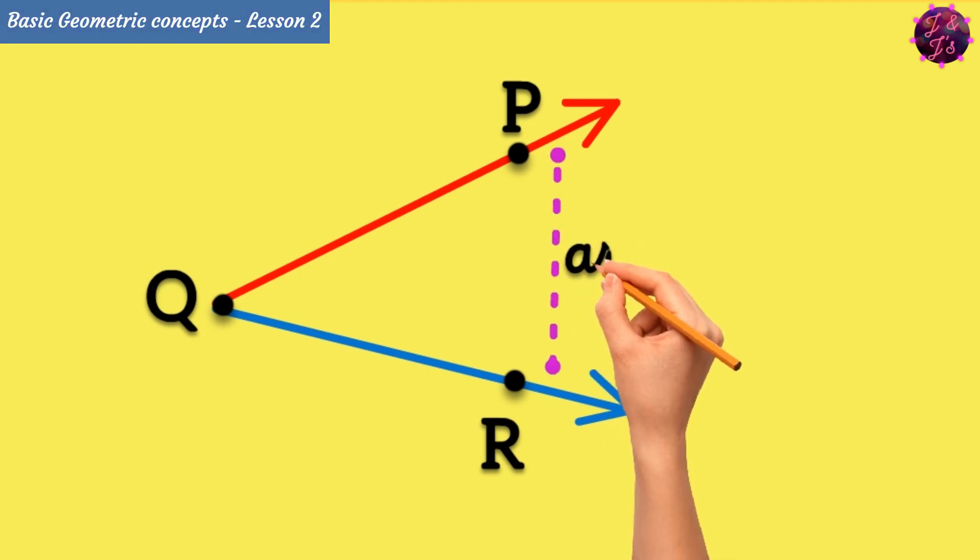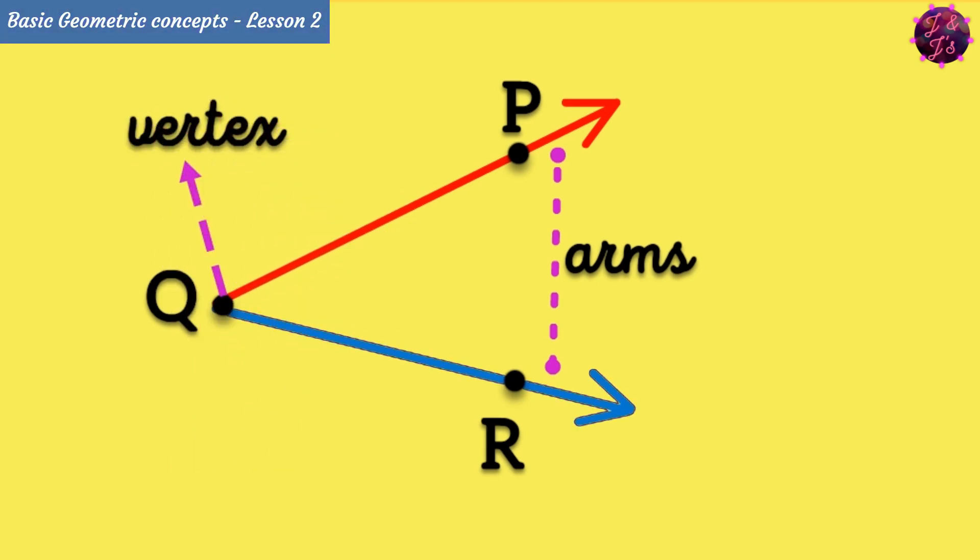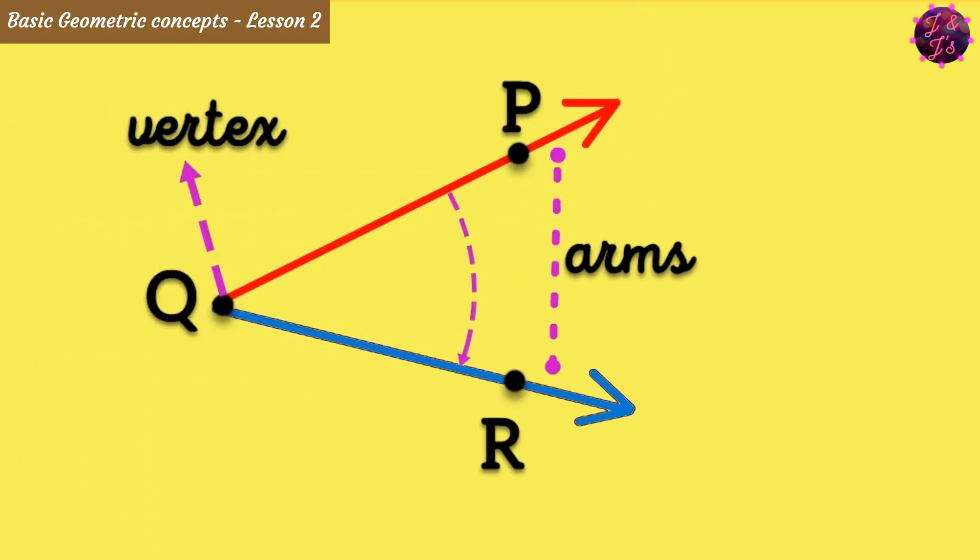Here, these two rays are called arms. The joining point of two rays are called vertex. Then next measure the angle between two rays using protractor. Yes, it is 39 degrees.